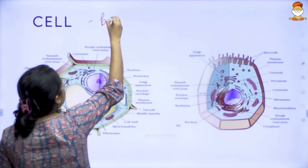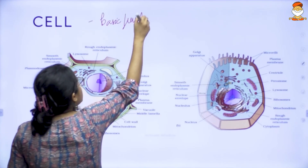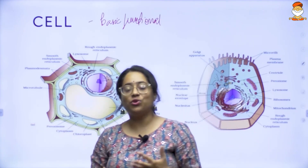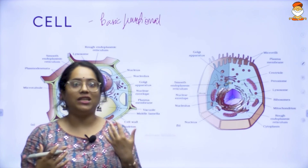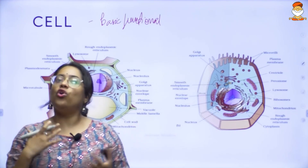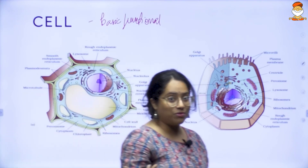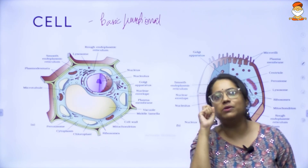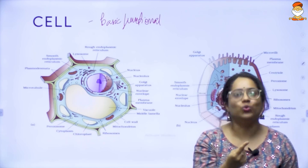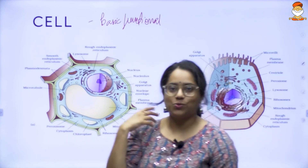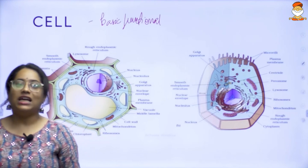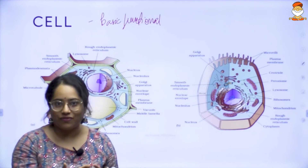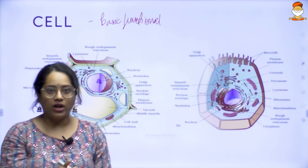The reason why a cell is called the basic functional unit is because all the functions we see — for example, in a human body, we respire, we excrete, we reproduce, we digest — all these processes that we do as a whole, it is because each cell in us is able to do that. All the functions we see on a larger scale are primarily seen in the smaller unit called cell.